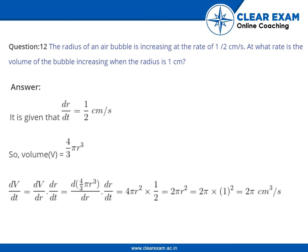1 by 2, which is equal to 2 pi r square, which is equal to 2 pi into 1 whole square, or 1 square is equal to 2 pi cm cube per second.